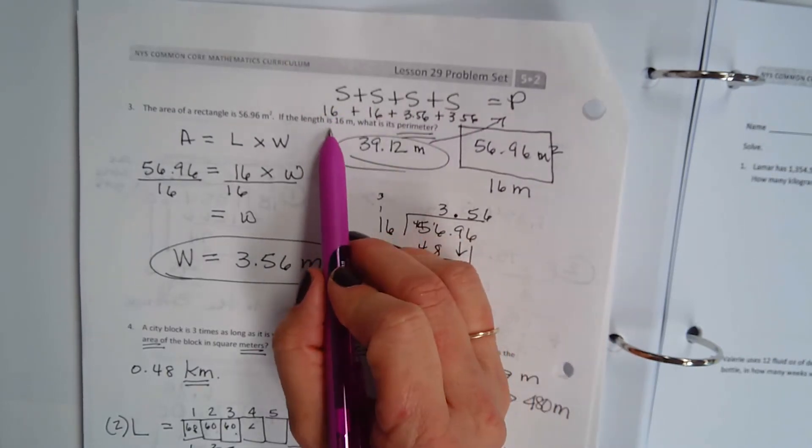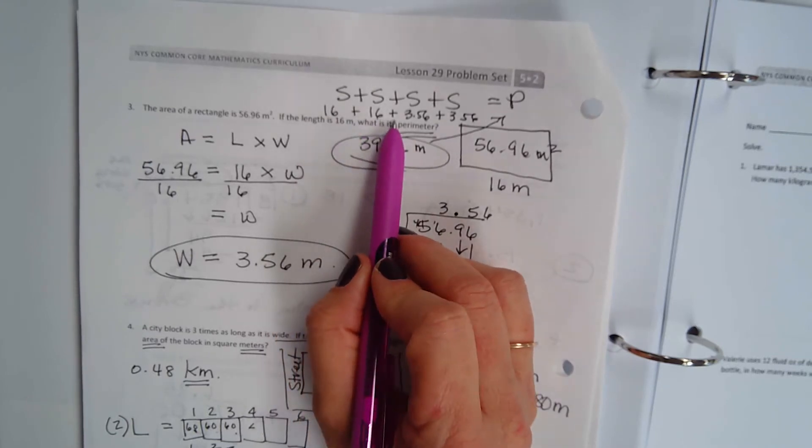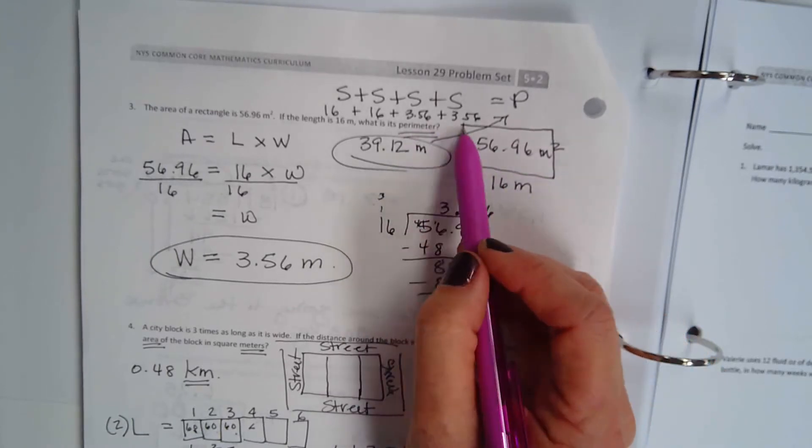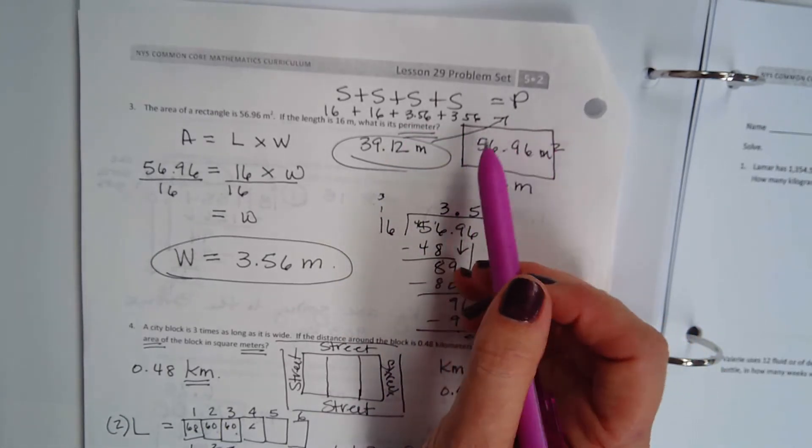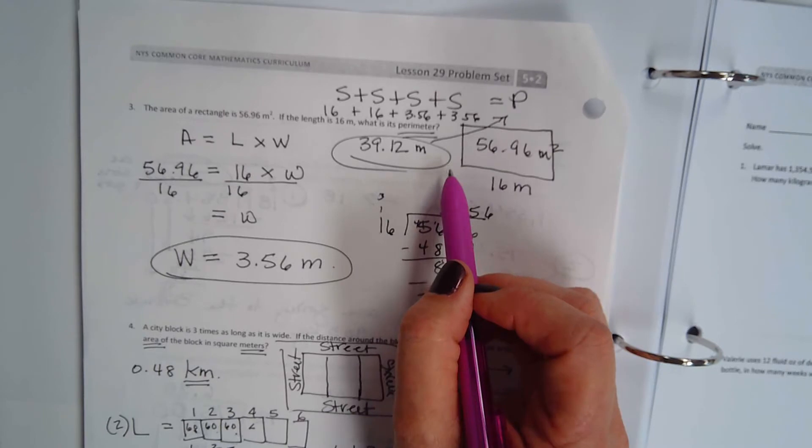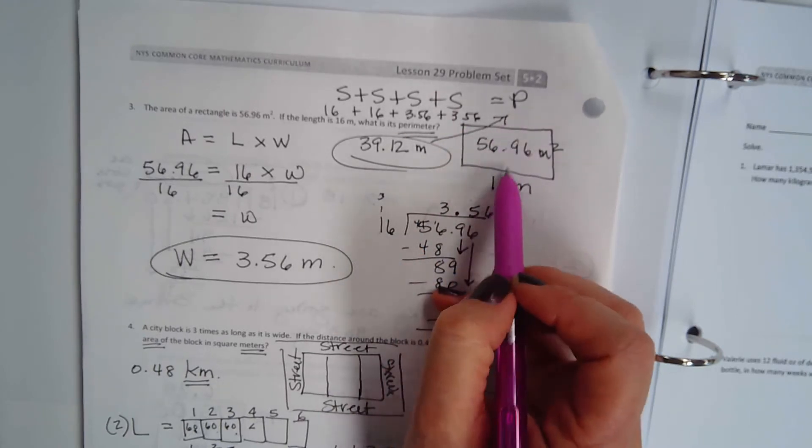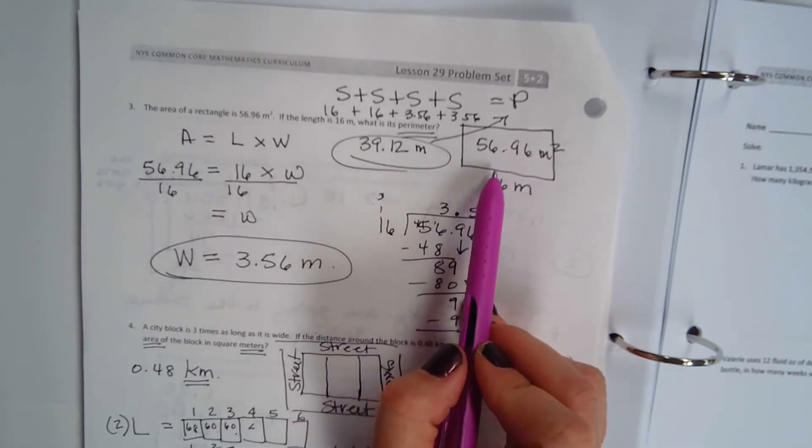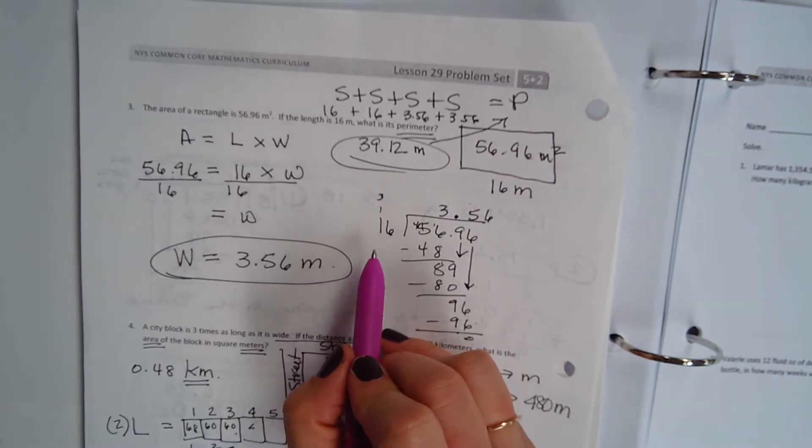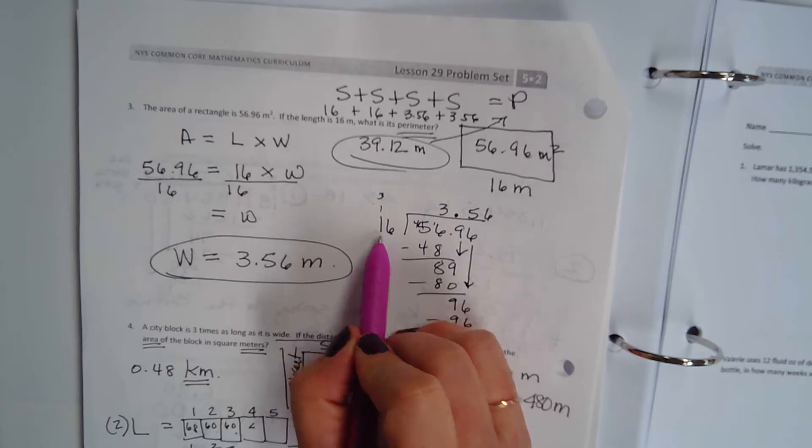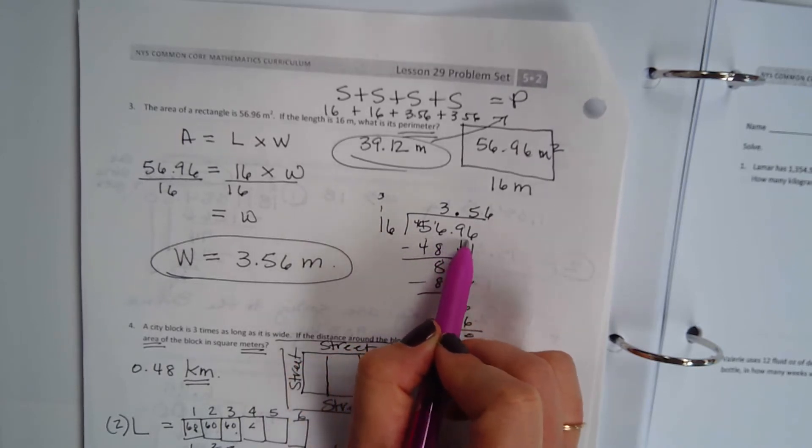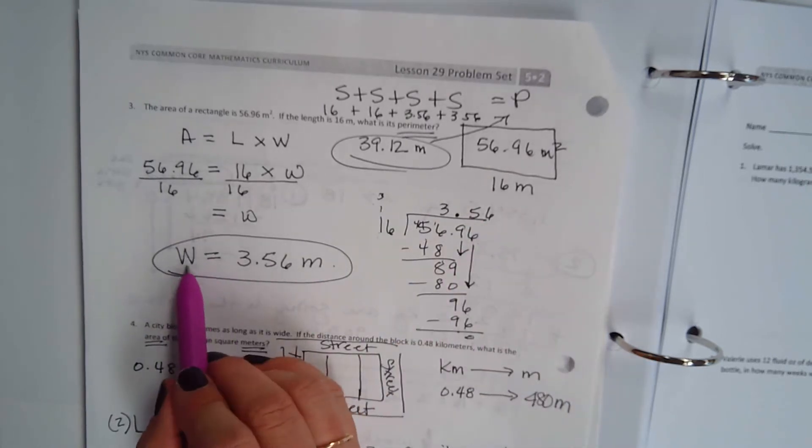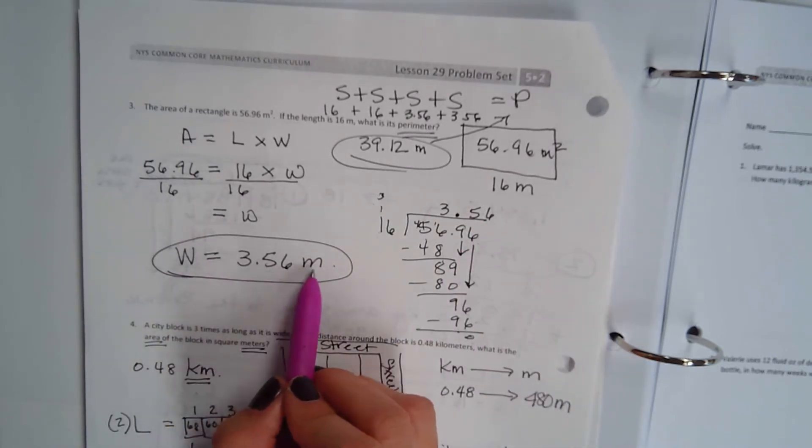So we know the length is 16 plus 16, and that's what we're trying to find out, right? We don't know those other two sides because it is a rectangle, and we know that rectangles opposite sides are equal. So what are we going to do? We're going to take 16 and divide it into 56.96 and get 3.56.